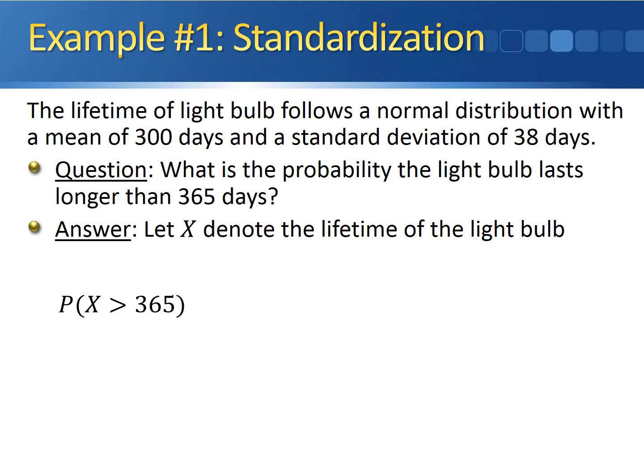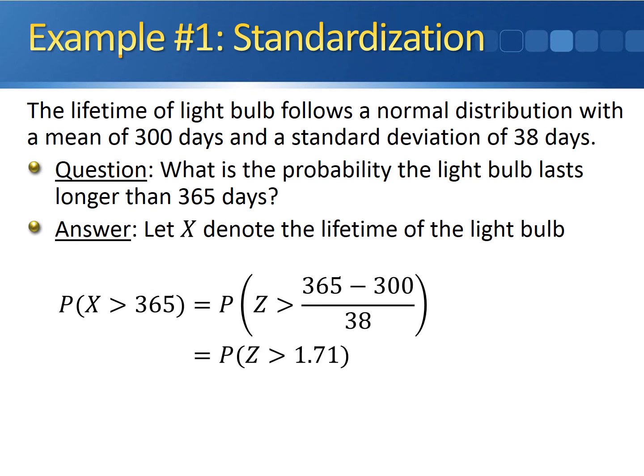365 days is the particular value from the normal distribution that we need to standardize. So we can standardize it by taking 365 minus the mean of the original distribution, which is 300, and dividing by the standard deviation, which is 38. 365 minus 300 over 38 gives us 1.71.